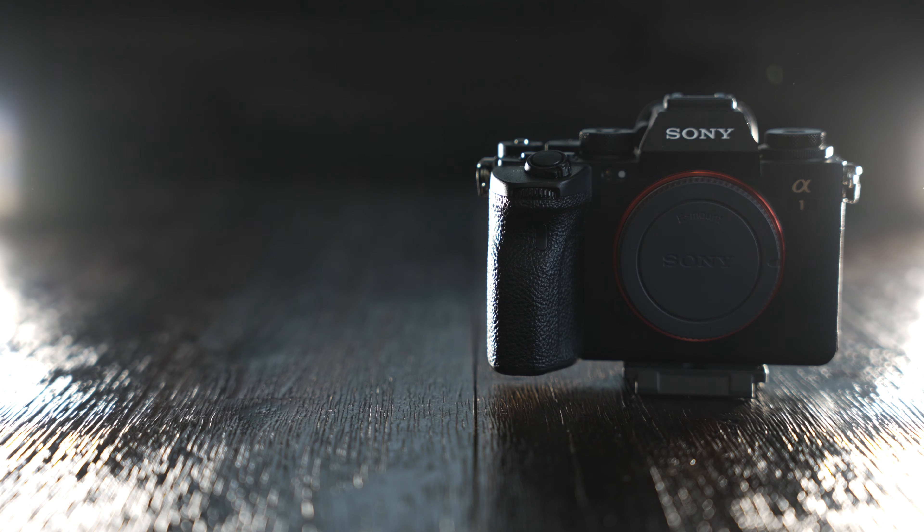I really wanted to do this video because there's not much out there comparing these two, and honestly we need to know more. In 2021 the Sony A1 launched with a small form factor, 8K internally, unlimited record times. And then recently the Canon R5C with 8K raw internally and unlimited recording. It's very easy to look up the specs of each one of these to see what they have and what they don't have.